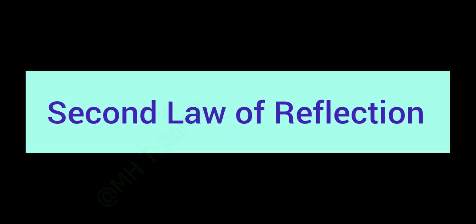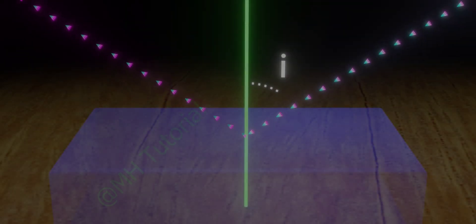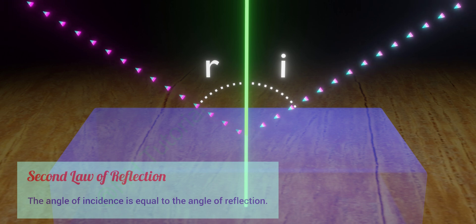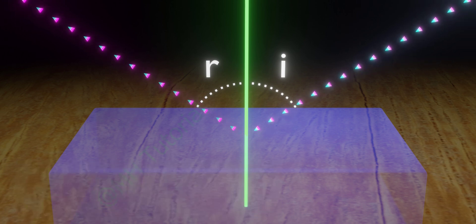Second law of reflection. It is very easy to understand. It says the angle of incidence is equal to the angle of reflection. These are the two laws that reflection of light maintains.